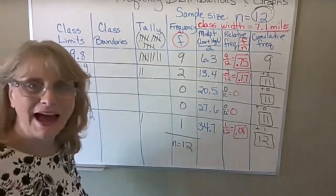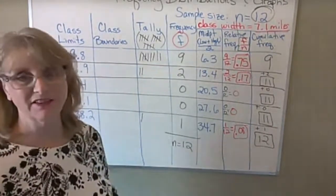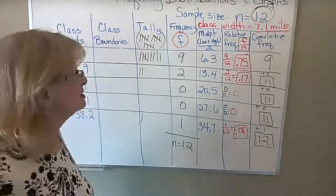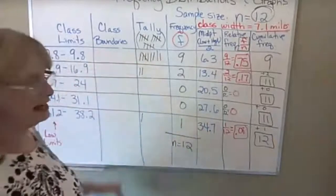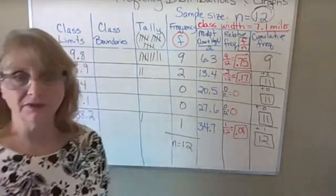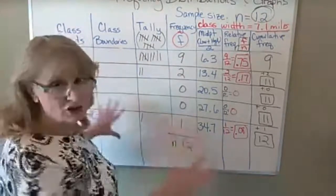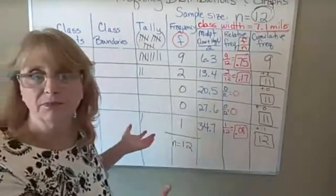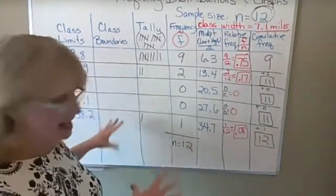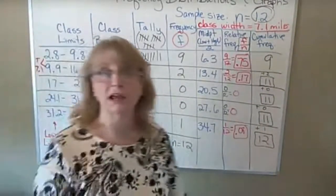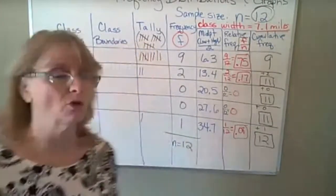It is 12 o'clock, and I still have some things left to cover, so let's go back to our frequency distribution. We're going to finish filling it out, and then we're going to look at a couple of different kinds of graphs you can create using the information. This is an organized way of setting up our data, and then we'll take this and create different kinds of graphs so you have a visual picture of what's going on.